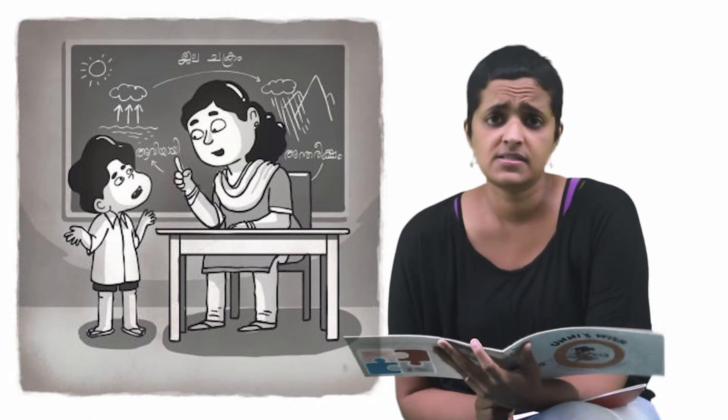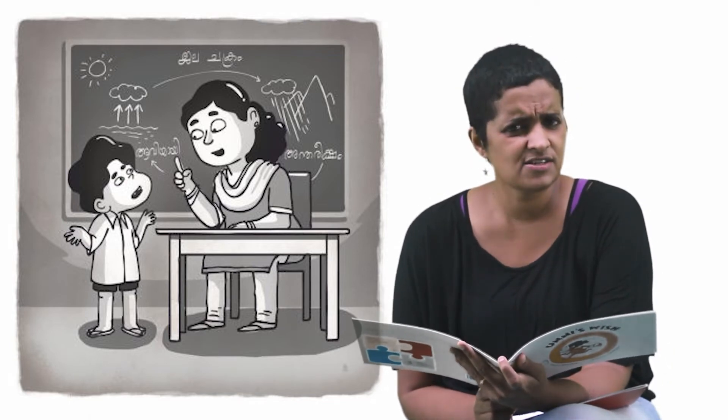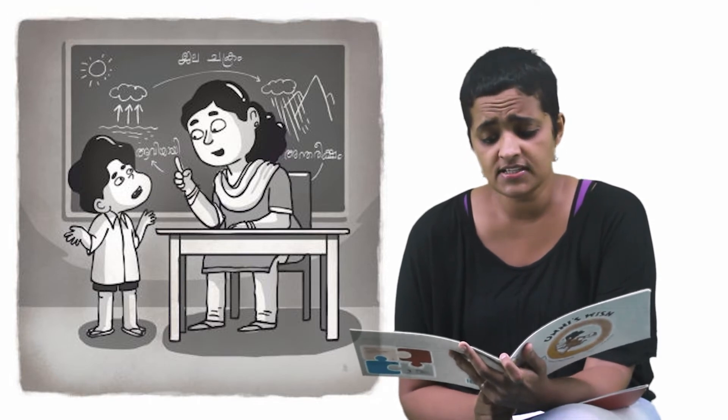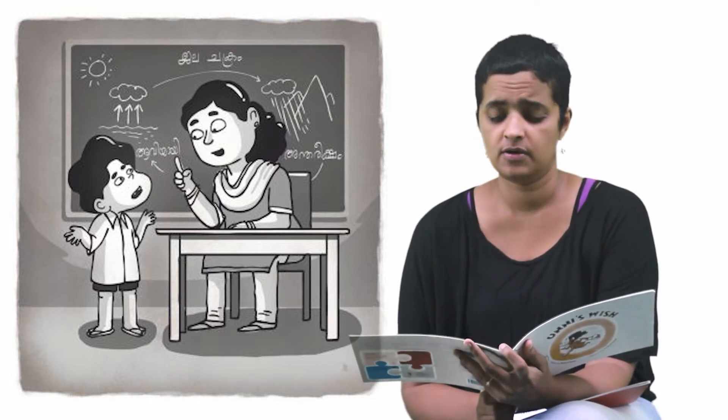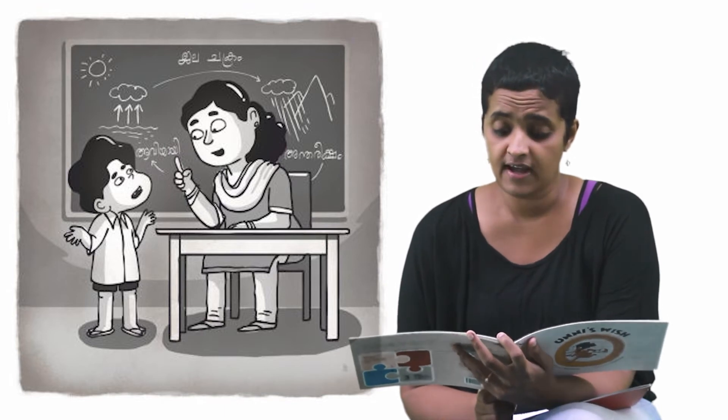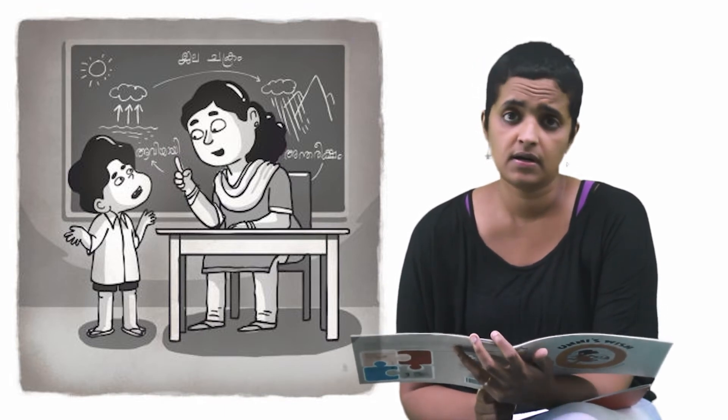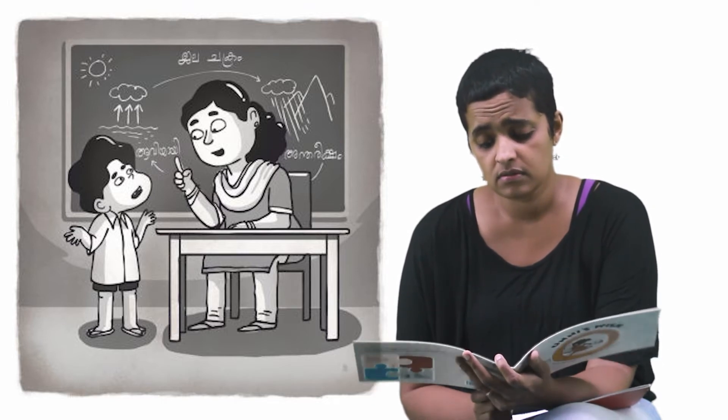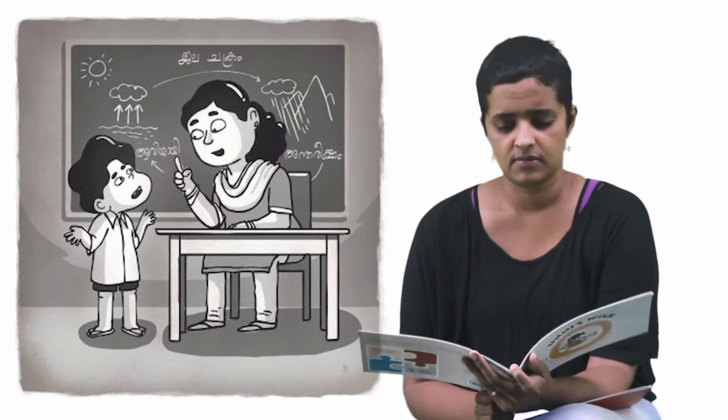Unni's head is bursting with questions. He decides to find Janaki Miss. Kutte Chaitan's shop has a fridge, but we don't have one at home. There's a fan at school, but we don't have one in our room. Ammu has a TV at home, but I don't. Why is that Miss? asks Unni.